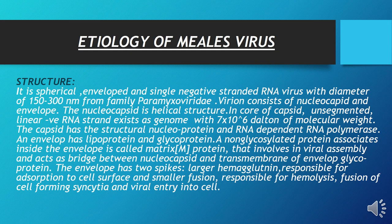Etiology of measles virus. The structure: it is a spherical, enveloped, single-stranded negative RNA virus. Negative RNA virus se murad yeh hai ke RNA strand ki jo polarity hoti hai woh three prime to five prime direction hoti hai. Is virus ka diameter 150 to 300 nanometer vary karta hai, aur yeh family Paramyxoviridae se belong karta hai.